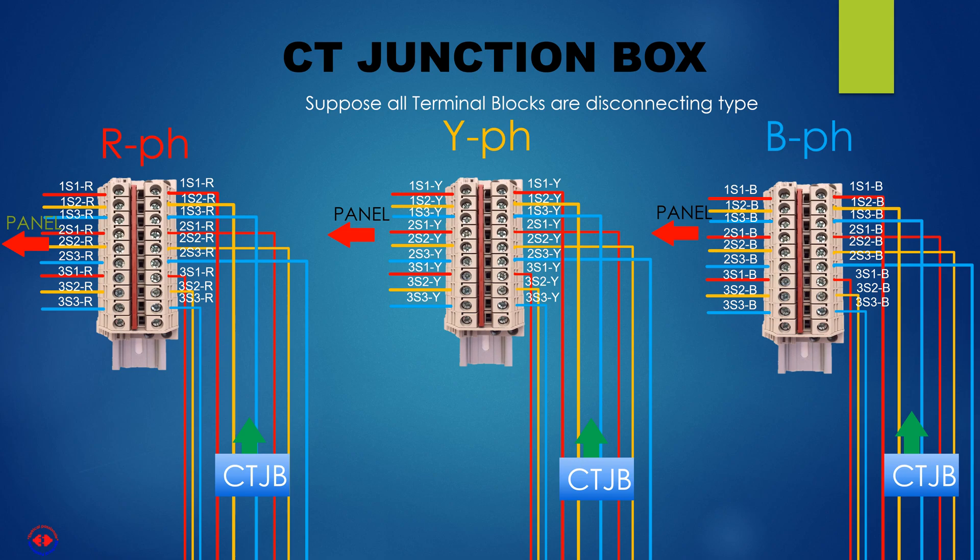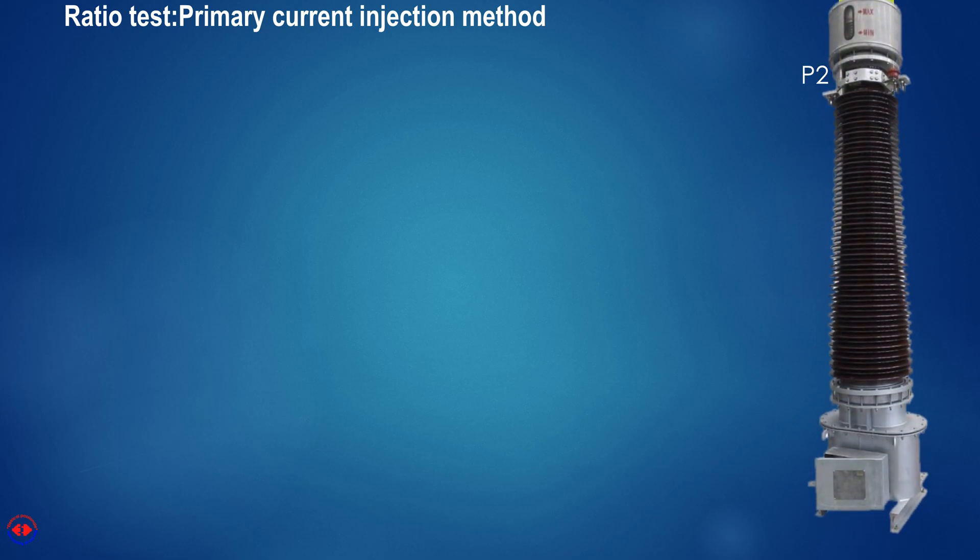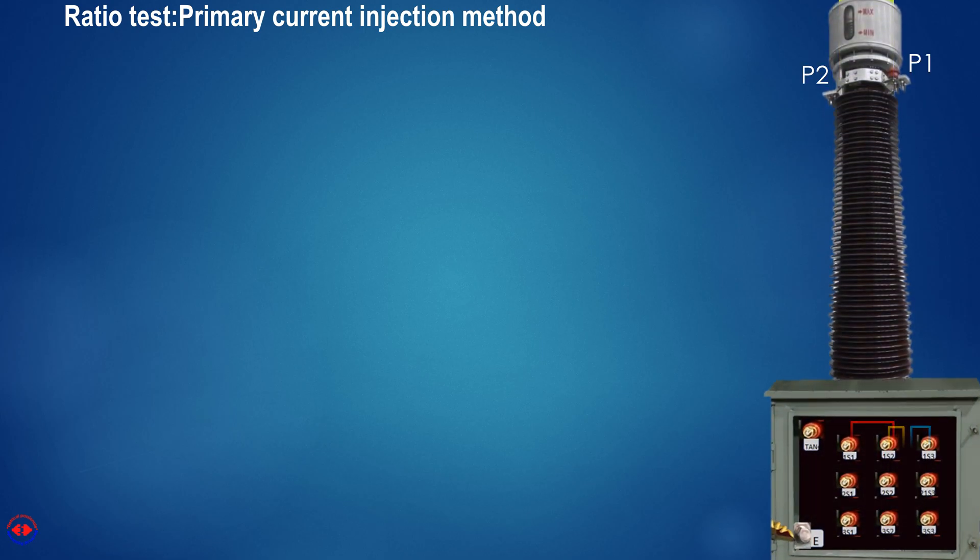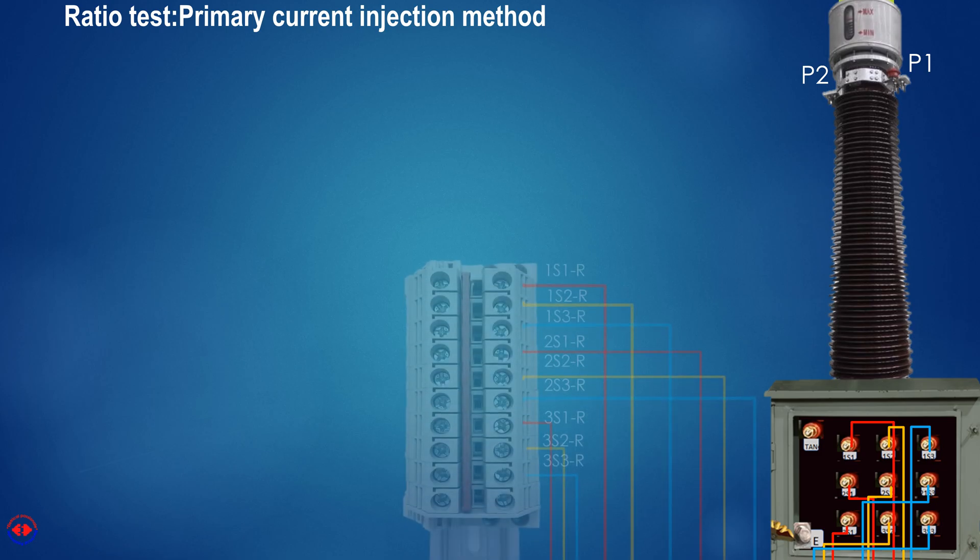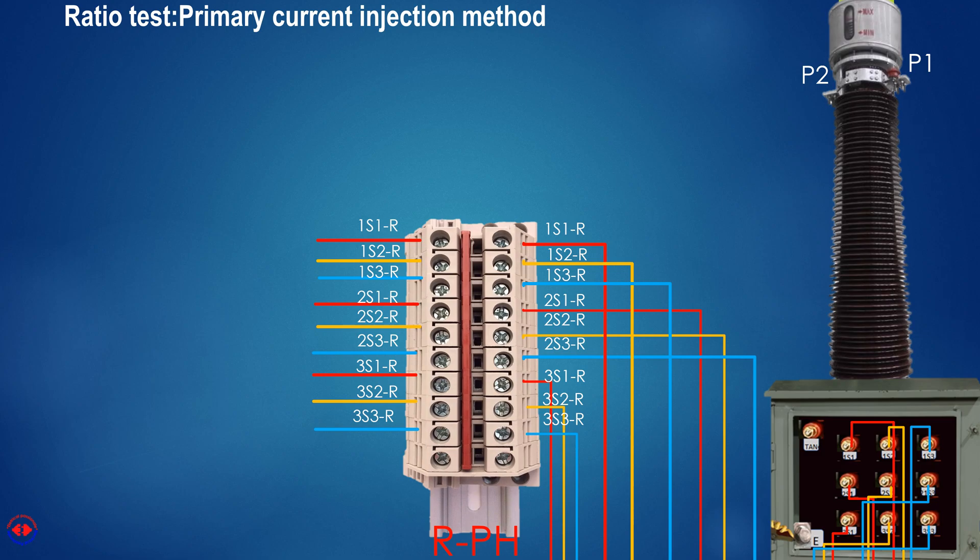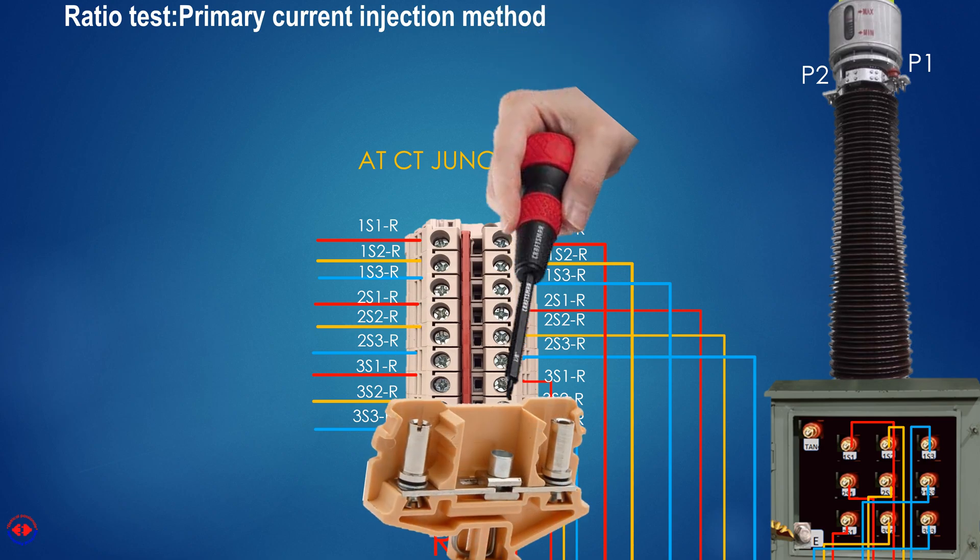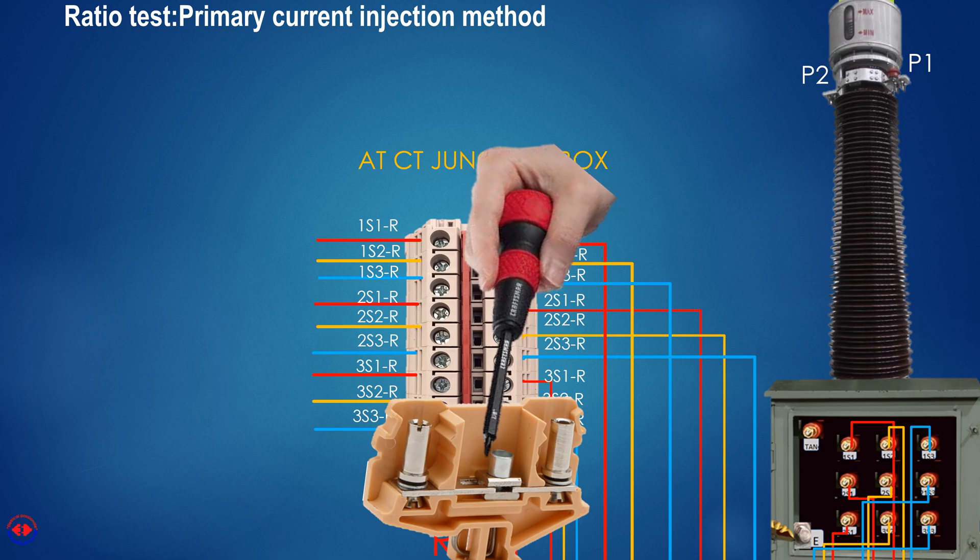During testing, shorting of all relevant wires are done either at junction box or at respective panel. It depends on how the connections were made and what we will prefer. There are many compact ratio testing kits available in market and department concerned, but the original theme of that kits are like this testing arrangement. Here, shorting is done at the junction box for simplicity of understanding. Disconnect all relevant terminal blocks from panel side work connections, left hand side here.